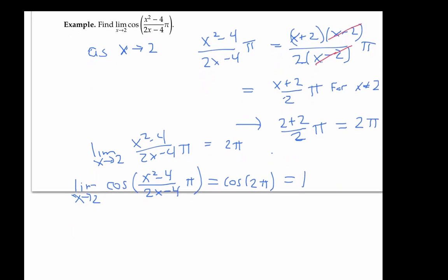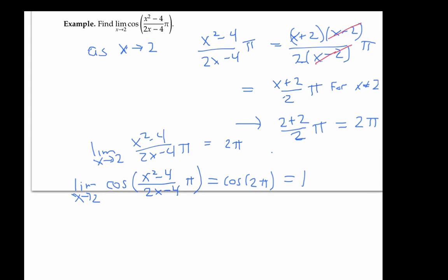We're using here the fact that cosine is continuous and a property of continuous functions, which says that the limit as x goes to a of f of g of x is equal to f of the limit as x goes to a of g of x, if f is a continuous function.